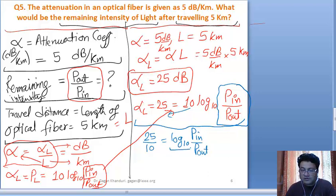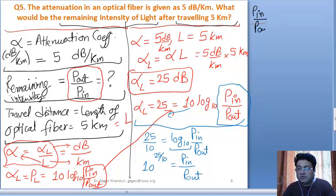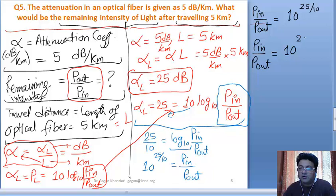Then we can send this log to the other side because it is base 10. So we can write it as 10 raised to power of 25 by 10 equals P_in by P_out. So P_in by P_out equals 10 raised to power of 2.5.